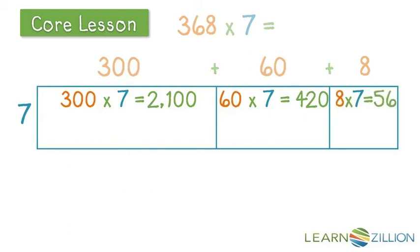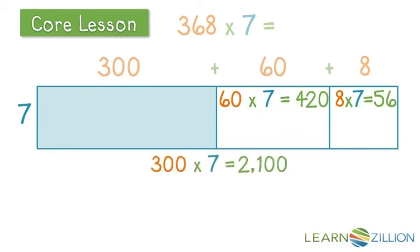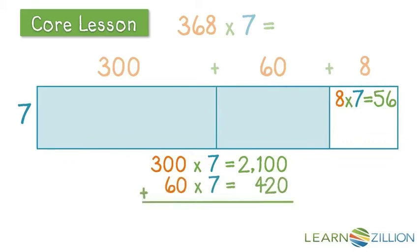Now all that's left to do is add the sections together. So, I'm going to take 300 times 7. Now, when I take 60 times 7, so now I know that 7 groups of 360 is 2,520.